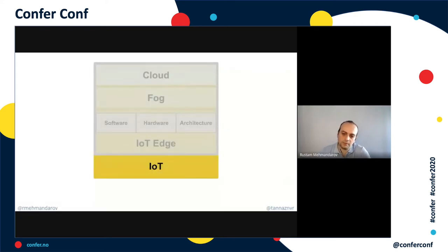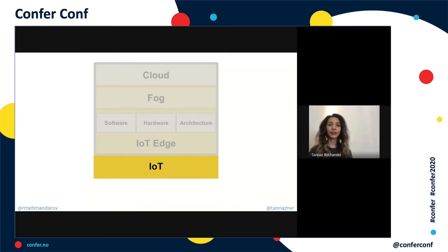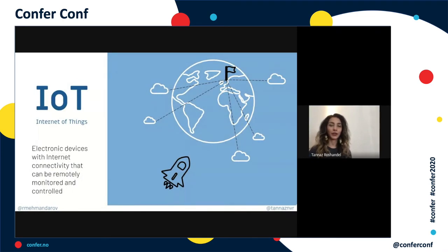IoT, or the Internet of Things, is the connection between our physical world and the digital world. These devices have internet connectivity, collect and generate massive amounts of data, send that data somewhere else for processing, and then receive the results. As internet connectivity and mobile technology improve rapidly, our lives become more dependent on such devices. As the number of devices grows, security challenges and privacy concerns will also rise — though these devices do give more access and opportunity to more people.